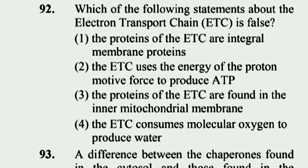Question 92: Which of the following statements about the electron transport chain (ETC) is false? The ETC uses the energy of the proton motive force to produce ATP is the false statement. Option 2 is right.